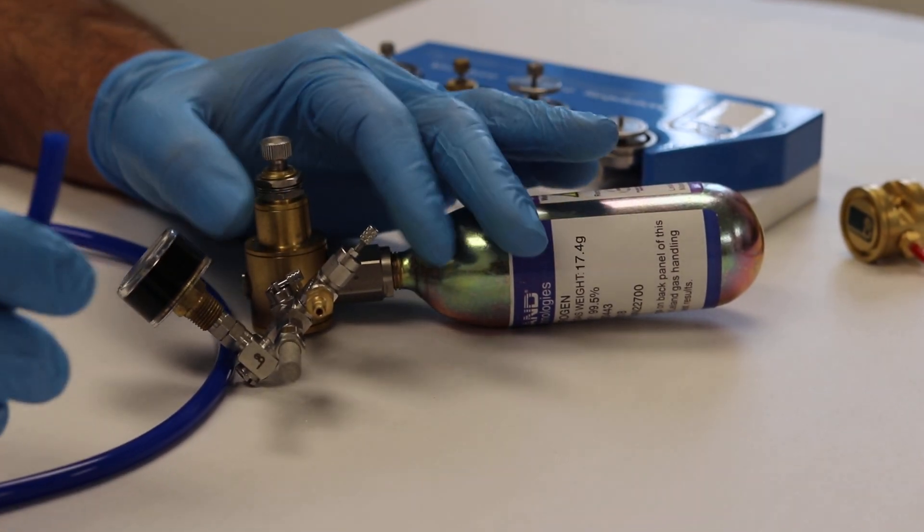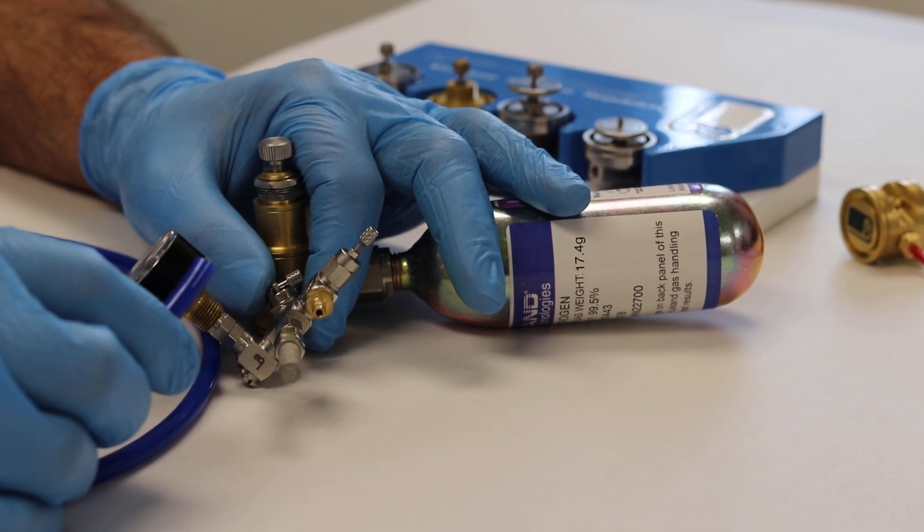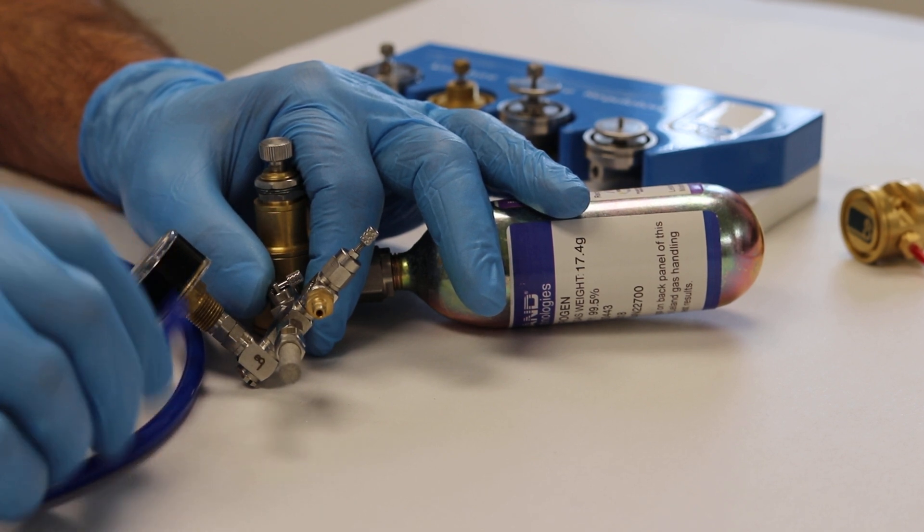Hi, this is Mike Donati in the Beswick Application Engineering Group. This video is going to show the recommended practices for installing and removing polyurethane tubing from barb-style fittings.